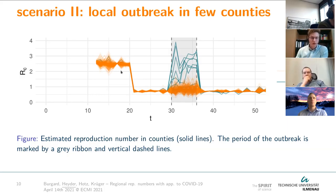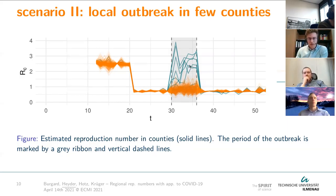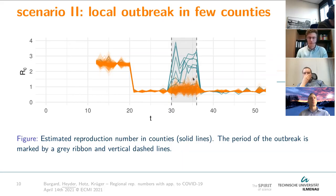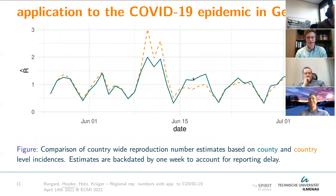For the county-level scenario, the same simulation is run but with increased reproduction numbers in selected counties — the ones plotted in green — within the gray-marked outbreak area. We can visually distinguish those counties quite nicely from the reproduction number estimates in the other counties.